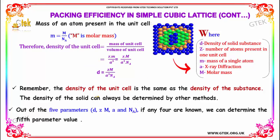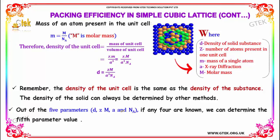The density of the unit cell is the same as the density of the substance. The density of the solid can always be determined by other methods. Out of the five parameters, if any four are known, we are able to identify the fifth parameter.